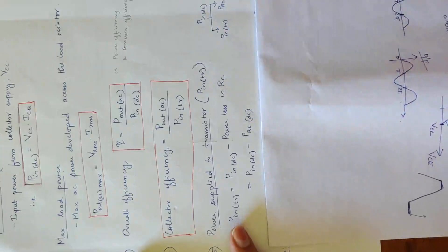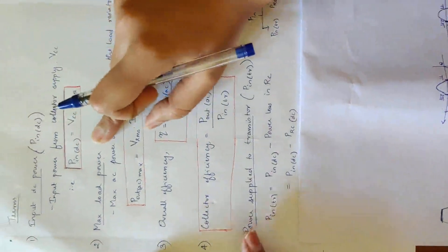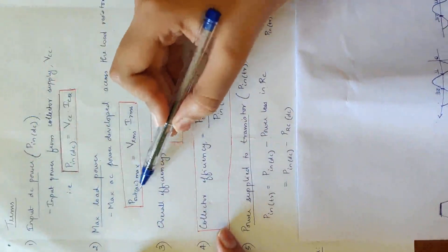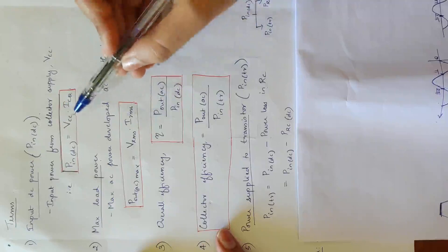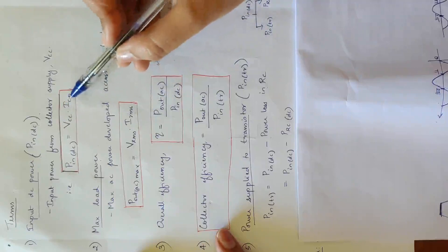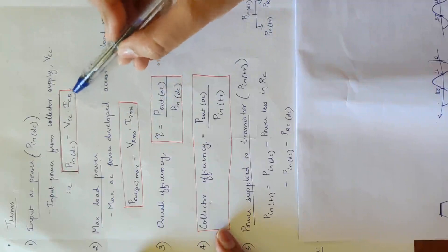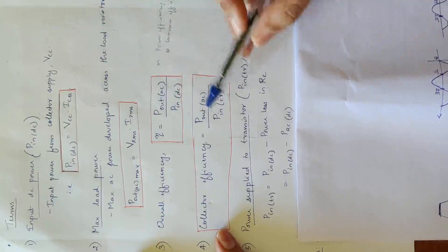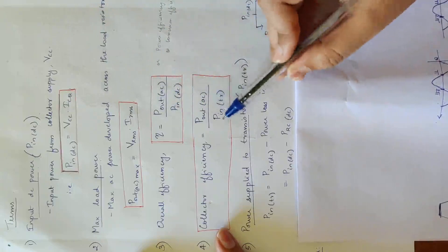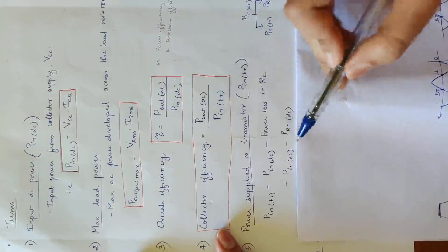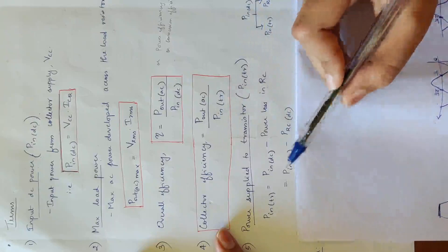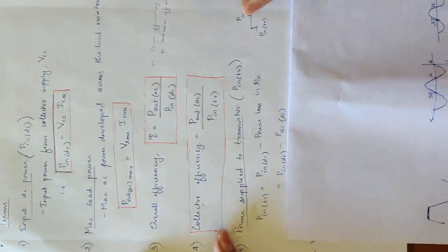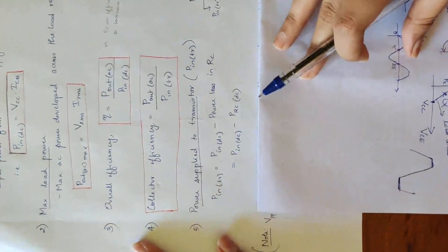Now we have the derivation equations. The terms are: P_IN_DC is input DC power, P_OUT_AC is output AC power, VRMS and IRMS, VCC is the DC supply, ICQ is the collector current at the Q point. Collector efficiency equation: P_IN_TR equals P_IN_DC minus power loss in collector resistance.